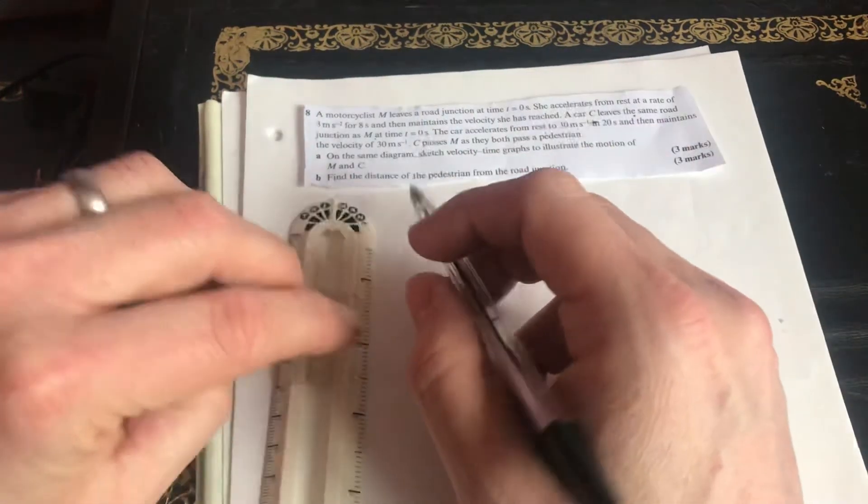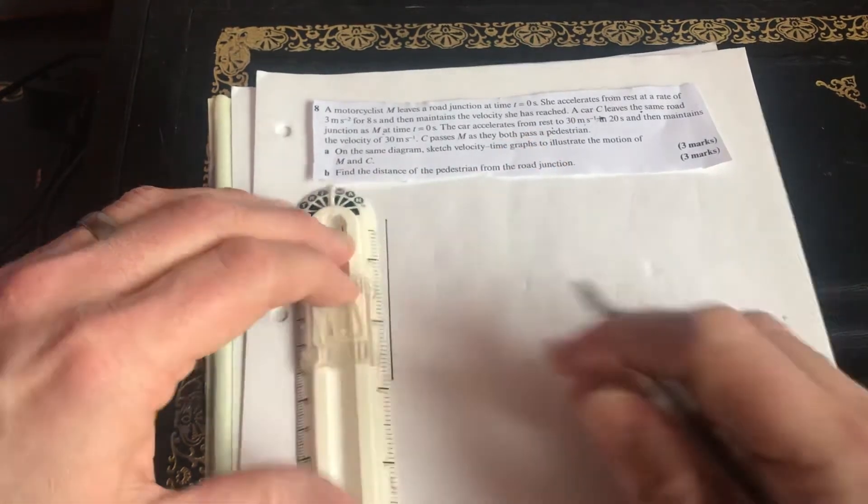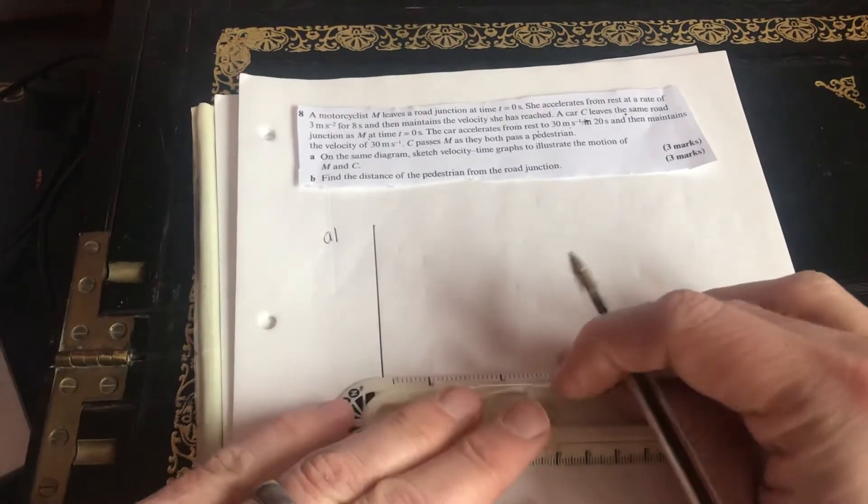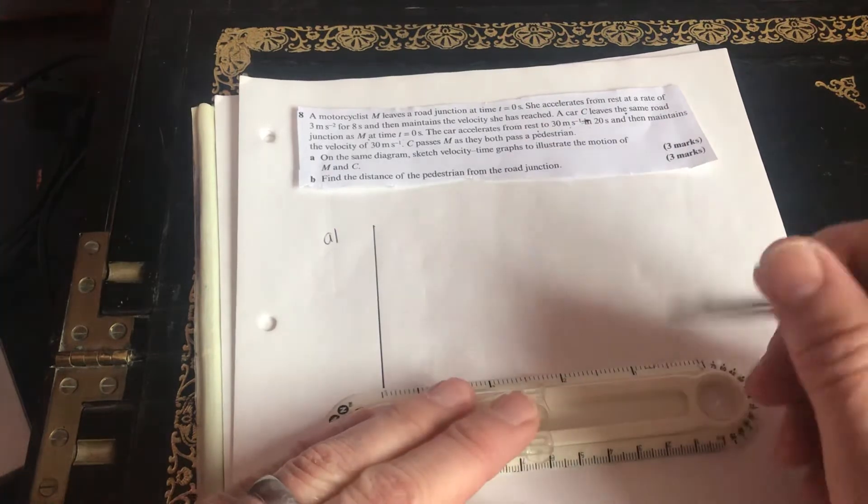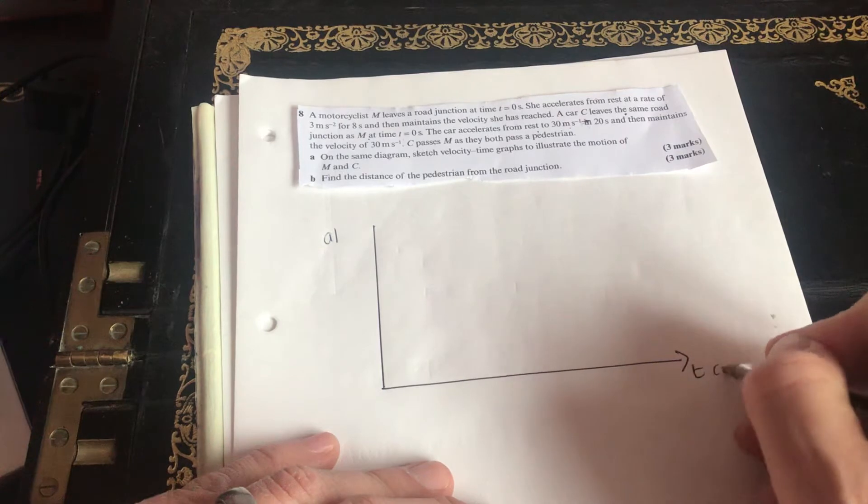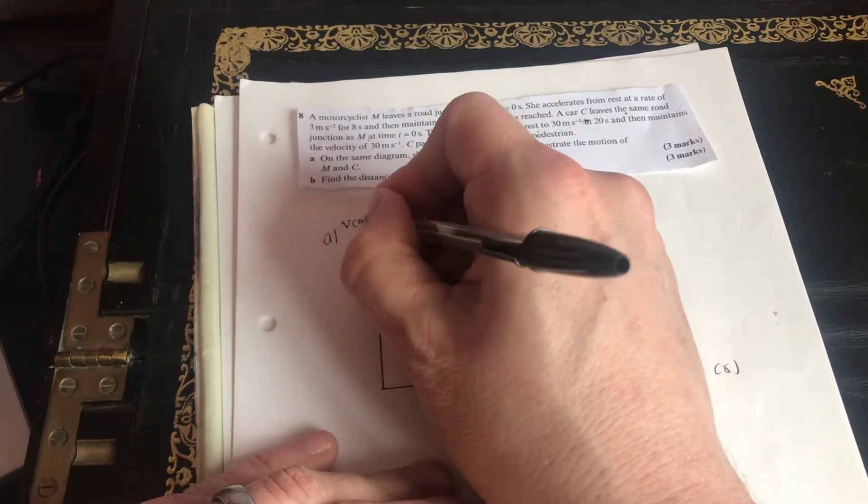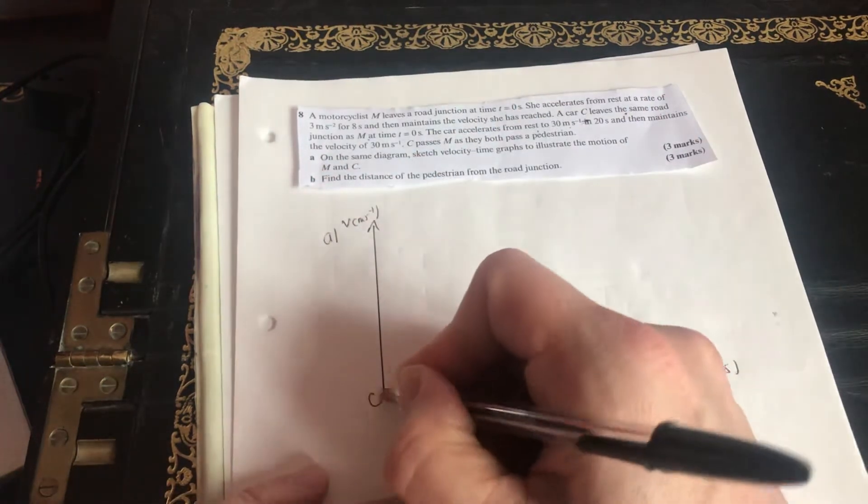So we're going to draw A. We need to draw the velocity time graph to illustrate what's going on. So there's time in seconds, there's velocity in meters per second, zero.